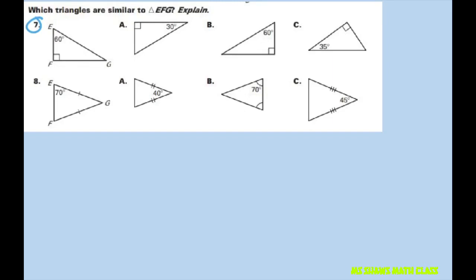We know that the triangle sum theorem means that this angle has to be 30 degrees, this one has to be 60, this one has to be 30, and of course they're all right triangles.